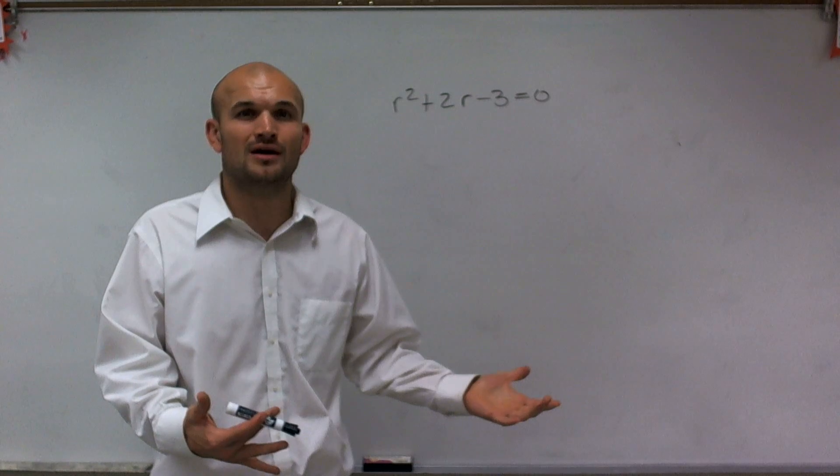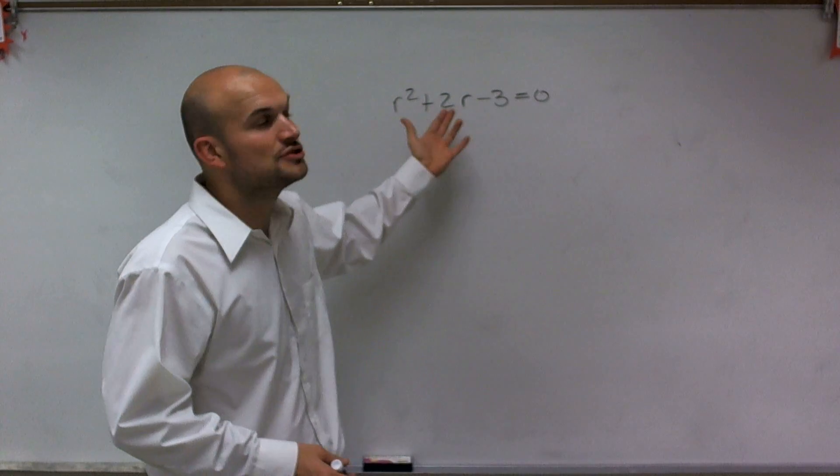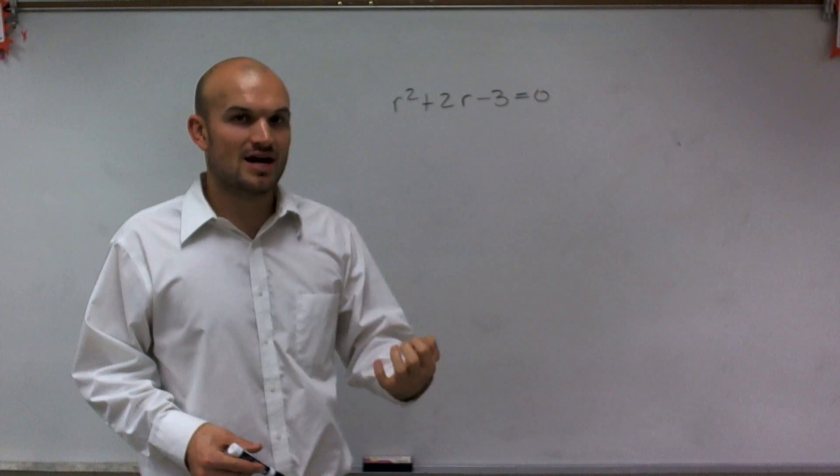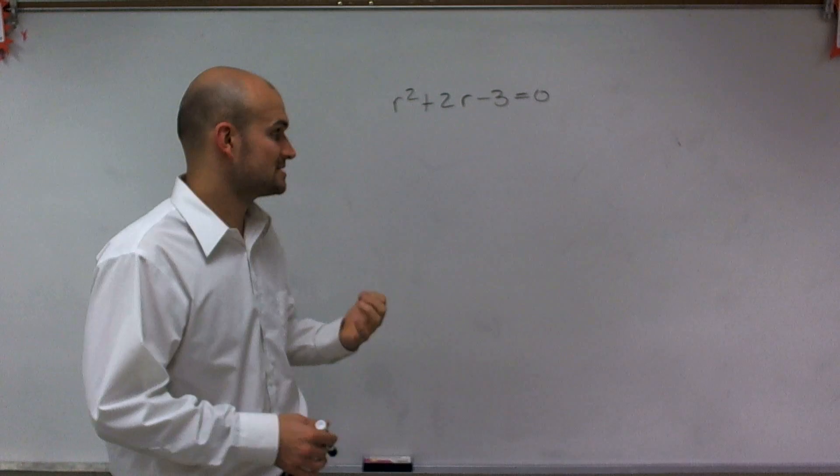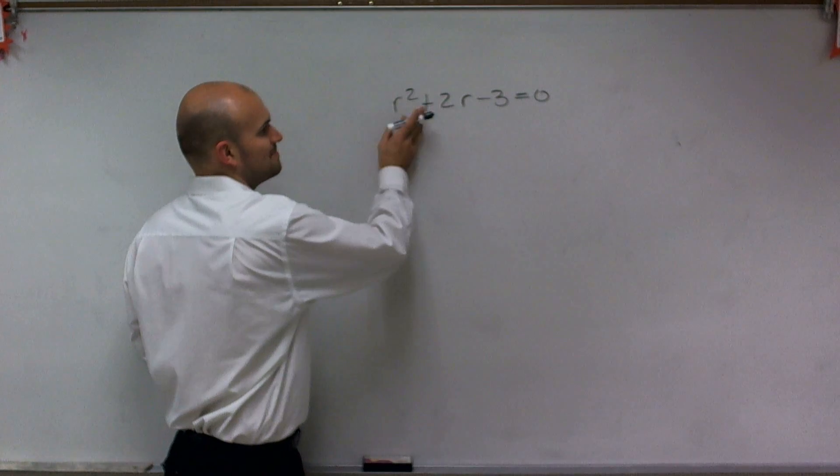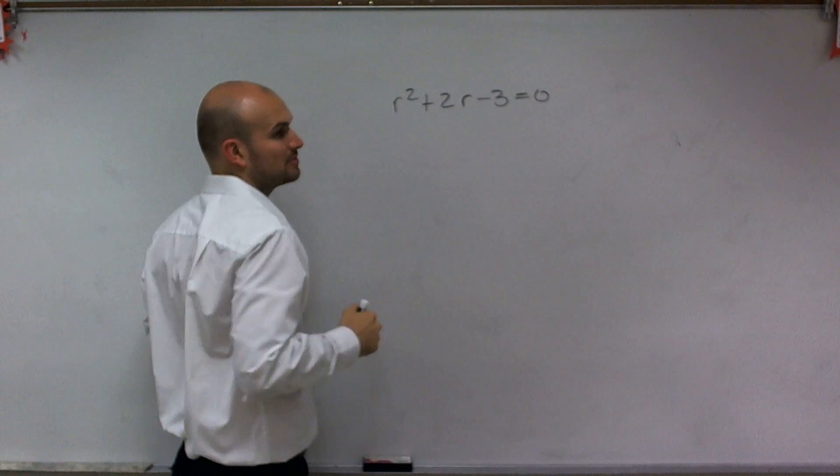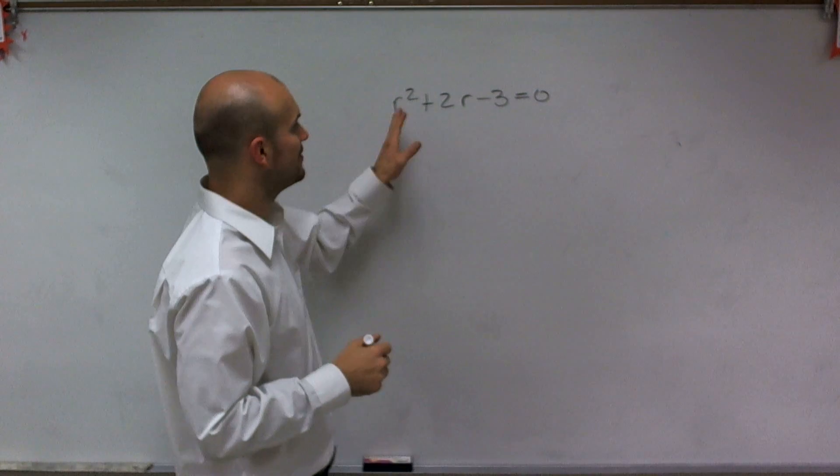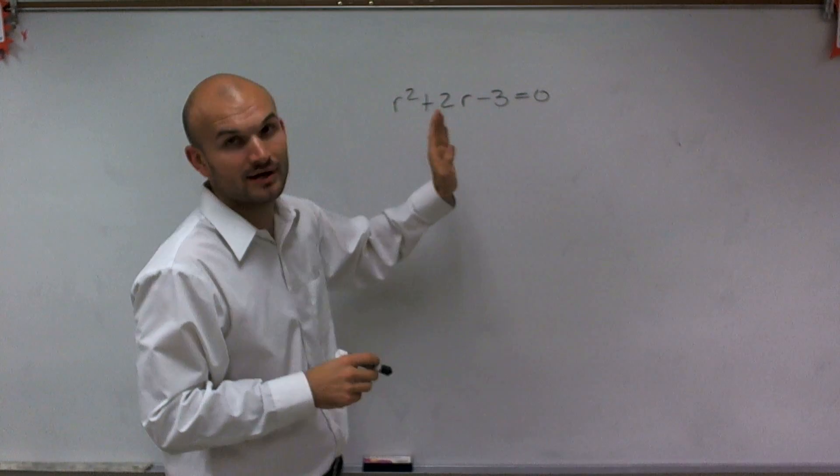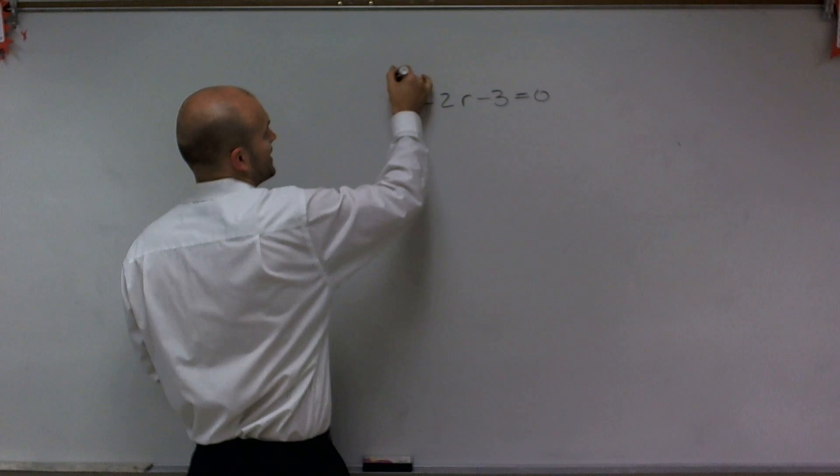One, we can't just solve for r by isolating the variable because I have two variables. But what draws me into using the quadratic formula for this is because I cannot combine these because one, I have a variable to the second power, and here I have a variable to the first power. And when you have a variable to the second power and down, this is what we call a quadratic equation.